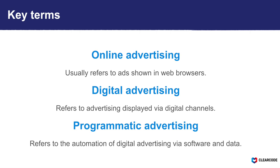Programmatic advertising refers to the automation of digital advertising via software and data. Before the internet, everything was a direct human-to-human process — there wasn't any software to help advertisers and publishers automate processes. When the internet was introduced, tech companies started building advertising software, or advertising technology, to automate the various processes used to buy, sell, deliver, measure, and manage digital advertising campaigns. Data also plays a key role, allowing advertisers to improve campaign performance and reach their target audience more effectively, and allowing publishers to increase their ad revenues.